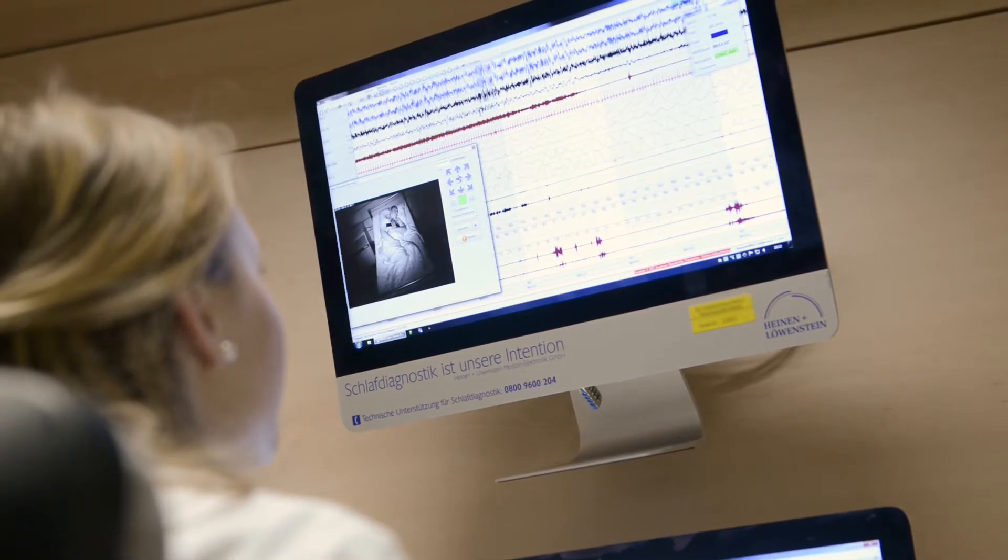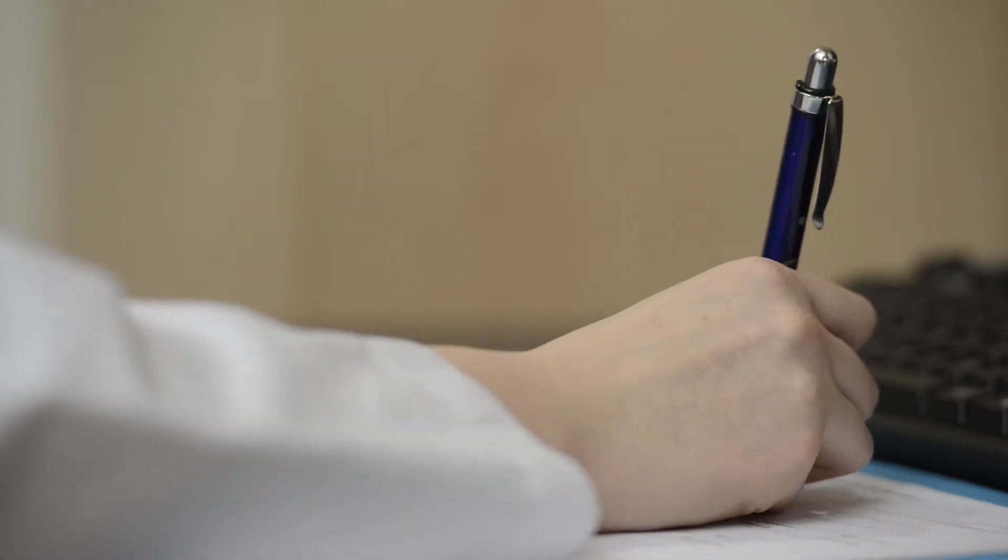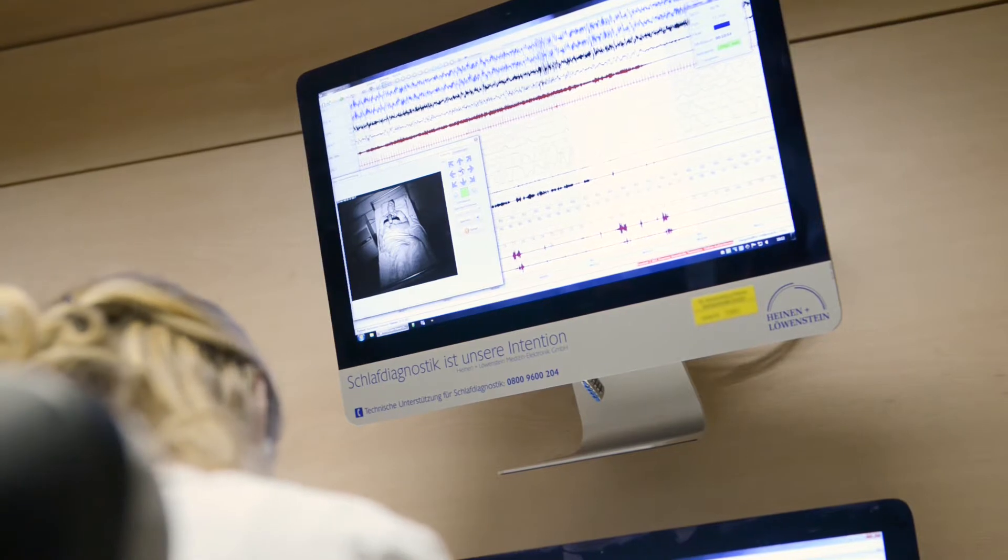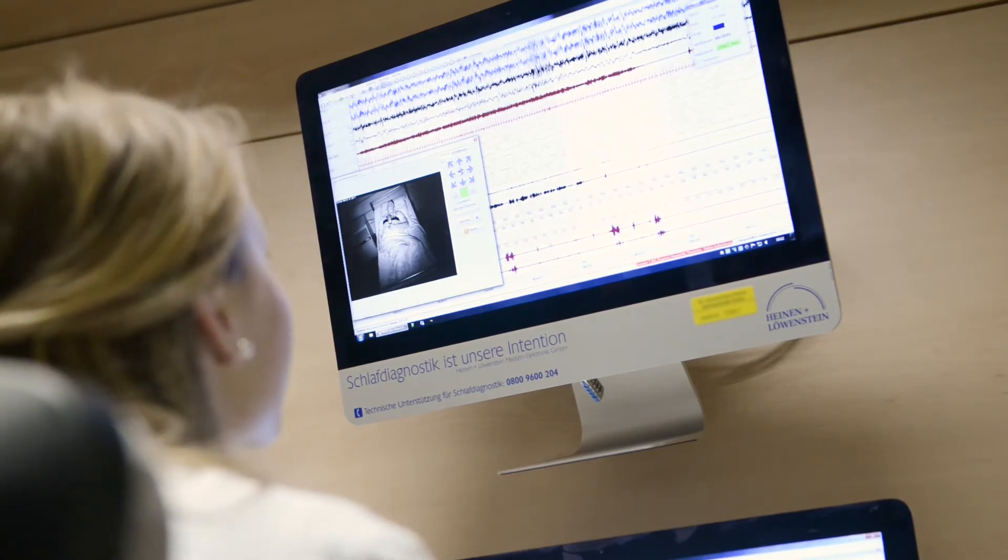In this, a distinction is made between non-REM sleep, which is 75-80% of the whole night and is split between light and deep sleep, and REM sleep, or dream sleep, which is 20-25% of the whole night.